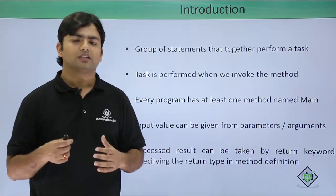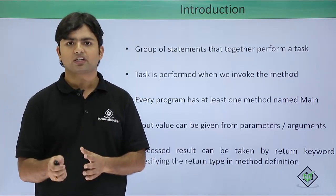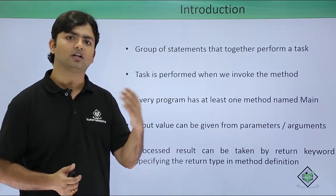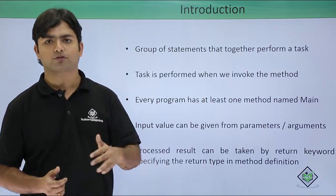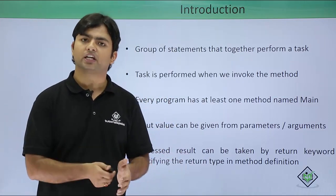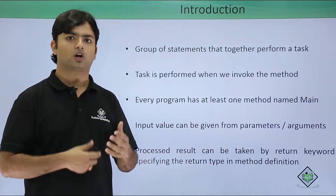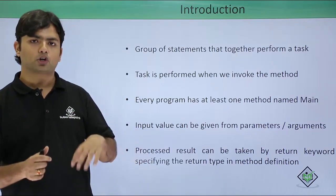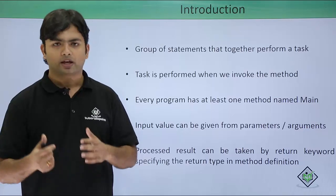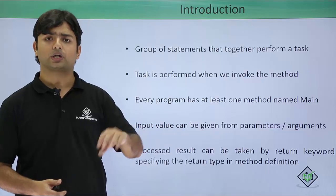So far in the main method we have seen void - void means this method is not going to return any value. You can use the return keyword only to terminate a method's execution, as we have seen earlier in the jump statements. Now you can use the return keyword to pass a value from the method body to wherever you are calling the method. To pass a value you will use parameters which have a data type, and to return the result you specify the return type.